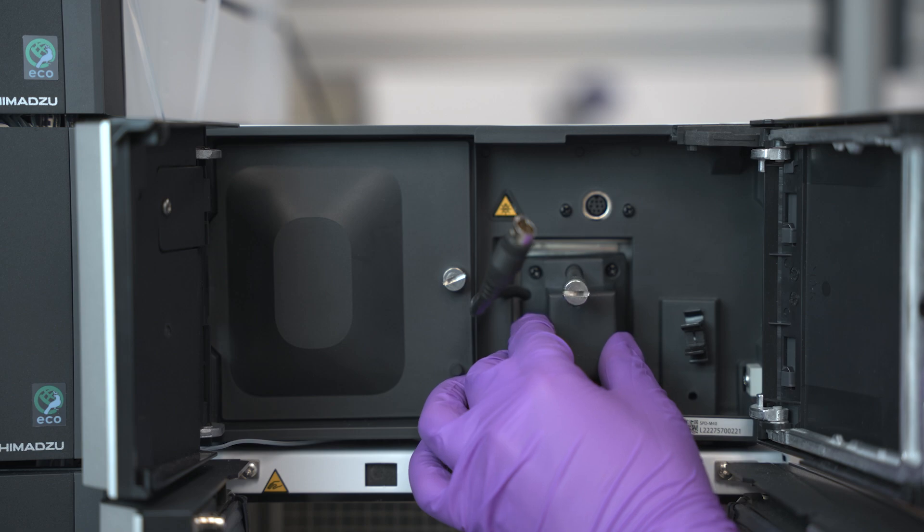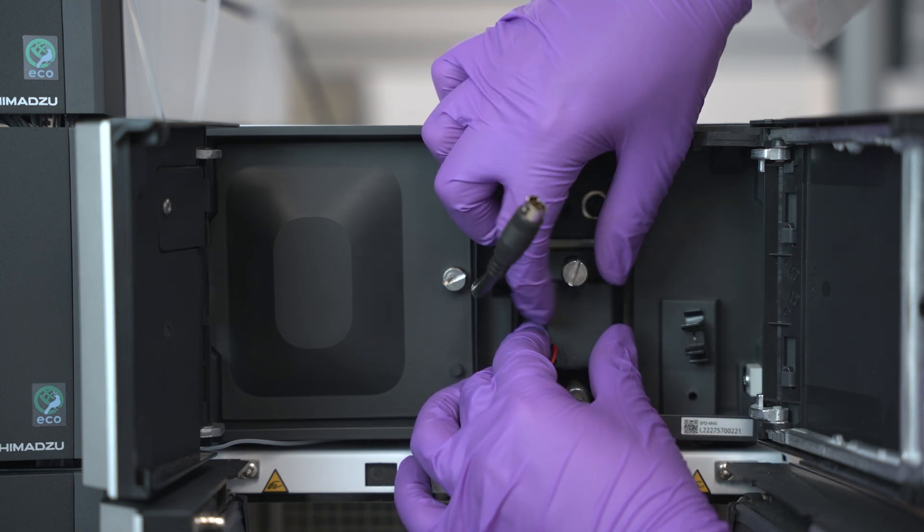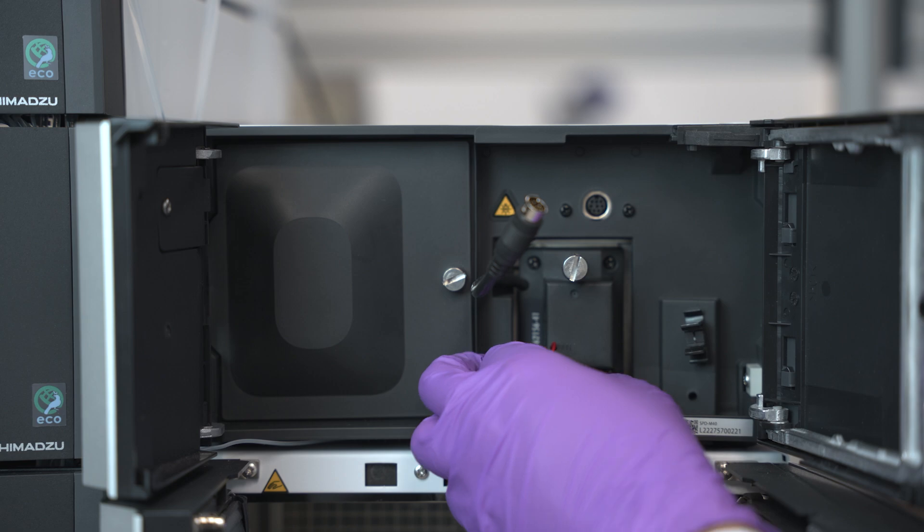Insert the flow cell into the detector. Hold the flow cell in place while you tighten the two cell mounting screws alternately.